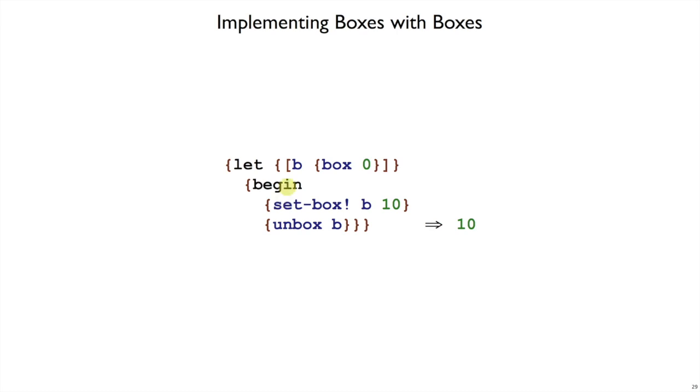So we saw this example already, where we let b be a new box, we change it, and we look inside of it. What if our program to evaluate is just box of 0? The result should not be 0, because the result shouldn't be just the number 0, it's a box that contains 0.